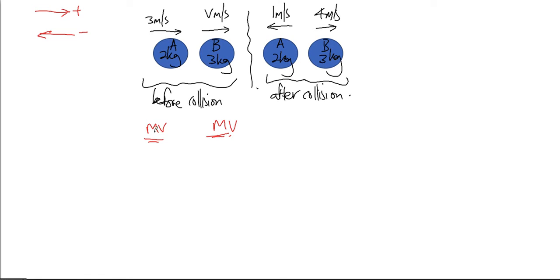Before collision: 2 kg multiplied by 3 plus 3 kg multiplied by v.